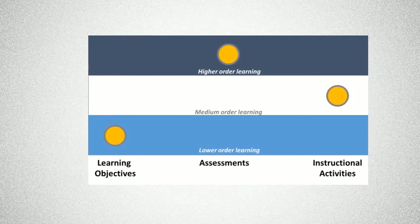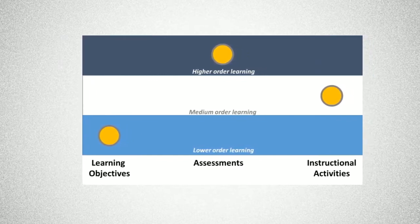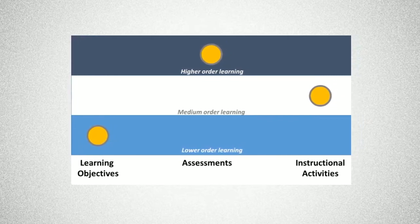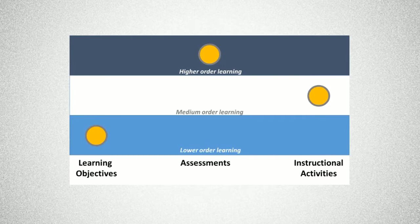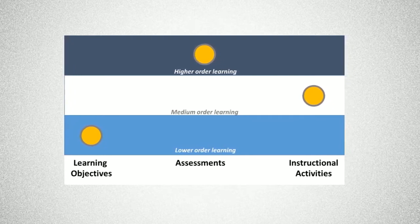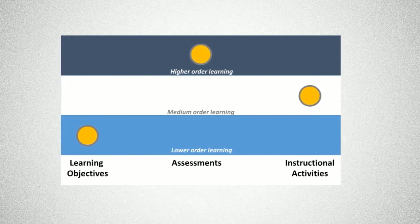Instructional alignment is the foundation of good instruction. Research has shown that having outcomes, assessments, and learning activities aligned can improve student learning by one or two standard deviations. This makes instructional alignment one of the most effective instructional strategies we have.